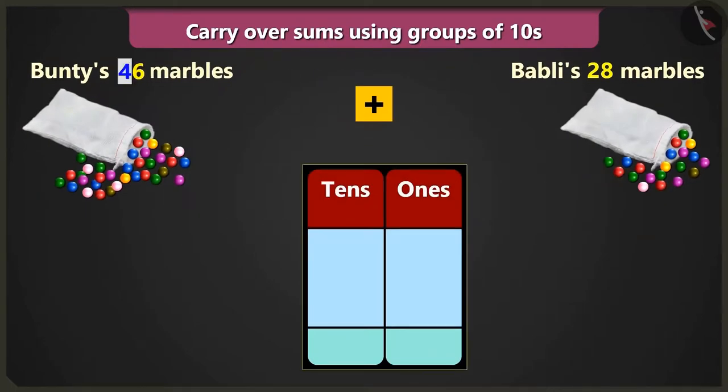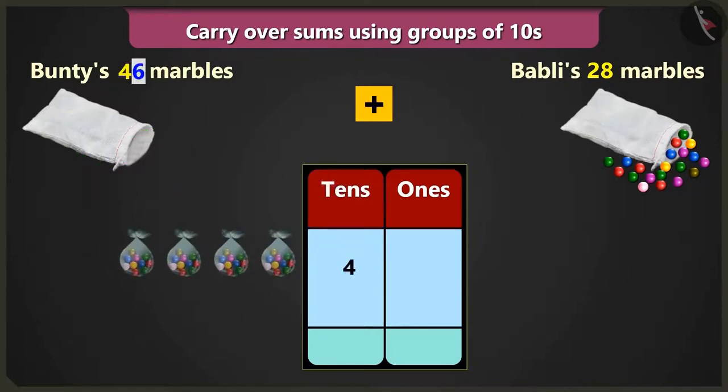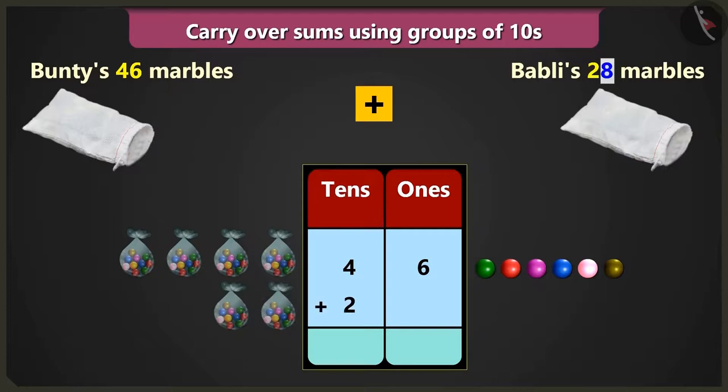I have 4 tens and 6 ones, 46 marbles. So, we will write 4 in the box of tens and 6 in the box of ones. Yes, and I have 2 tens and 8 ones. So, we will write 2 in the box of tens and 8 in the box of ones.